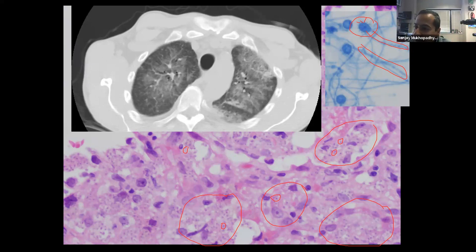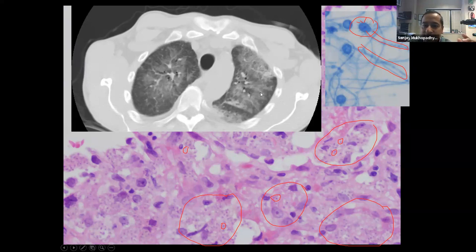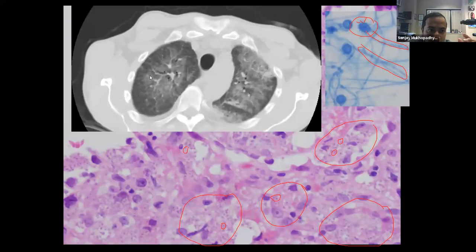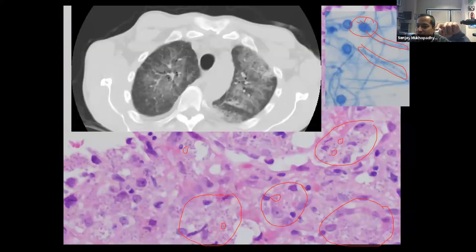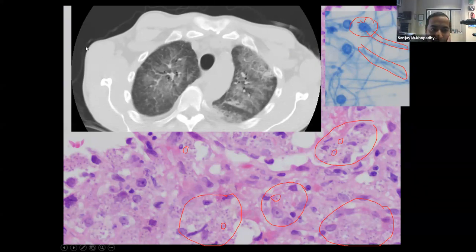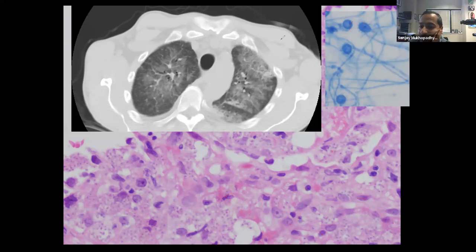Comparing Histoplasma to Cryptococcus: Crypto has bigger organisms with a clear halo. Histoplasma has small, very uniform yeast with no clear-cut halo, filling histiocytes, and turns into a mold in culture. For boards, they'll likely give you the disseminated form of Histoplasma with an immunocompromised patient where organisms are visible on H&E — not the solitary nodule form.